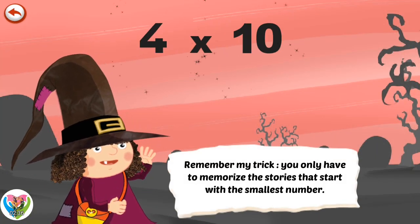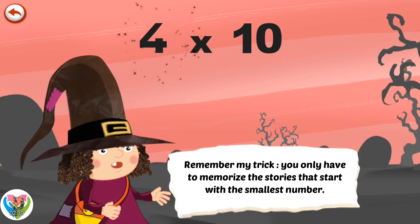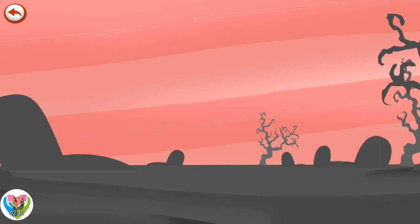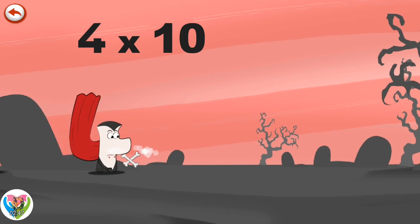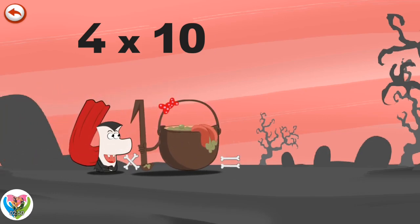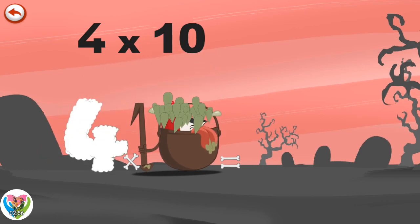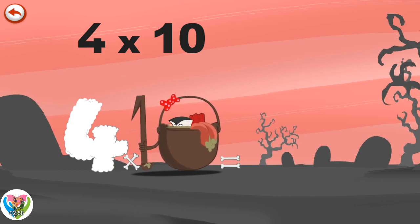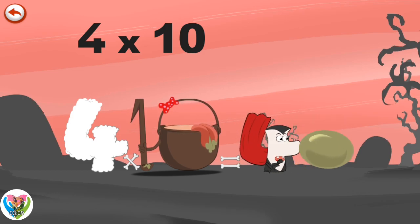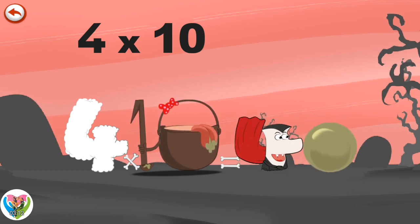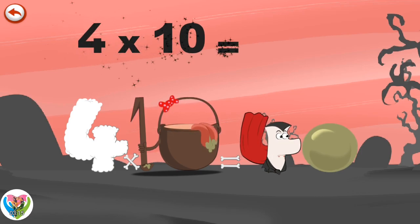Remember my trick. You only have to memorise the stories that start with the smallest number. What's the story of 4 times 10? When Vamp 4 meets the potion Magi 10, it makes him very, very hungry. He dives headfirst into the cauldron and comes out feeling very full. He gives an enormous magic burp and blows a bubble in the shape of a zero. 4 times 10 is 40.